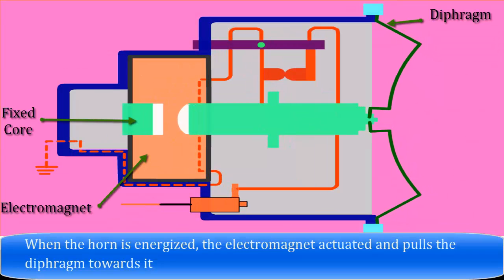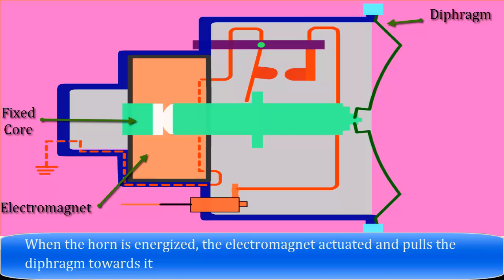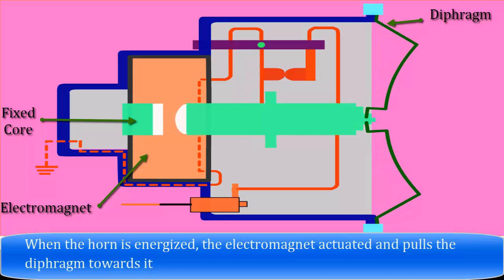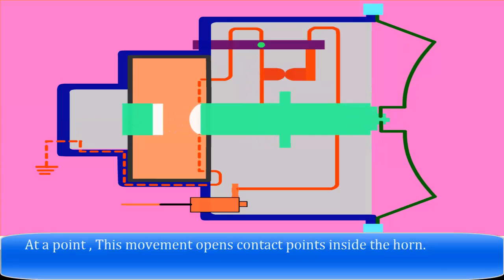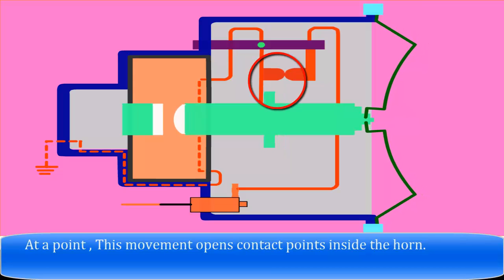When the horn is energized, the electromagnet actuates, and it pulls the diaphragm towards it. At a point, this movement opens contact points inside the horn.